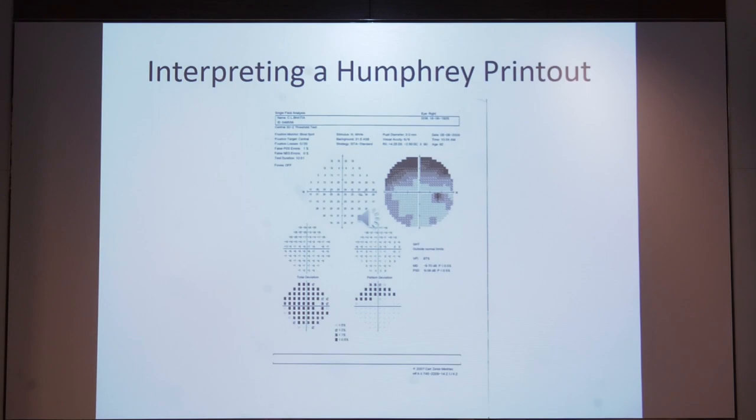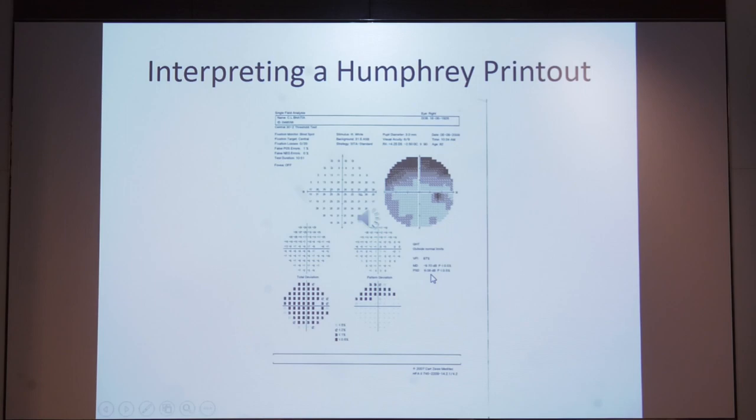This is what the typical Humphrey perimetry printout looks like. On top, you have patient identification parameters, as well as the reliability indices and the machine settings. Then you have the threshold parameters. You have the grayscale on top, then you have the probability plots below. You have the pattern standard deviation plots on the right below. And on the extreme right, you have certain parameters such as the mean deviation, the glaucoma hemifield test, as well as the pattern standard deviation values.